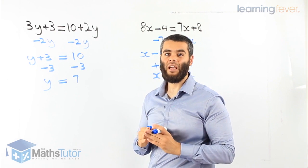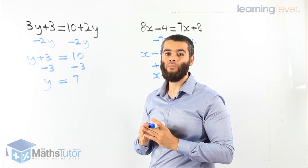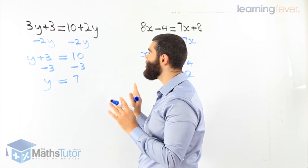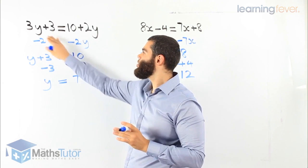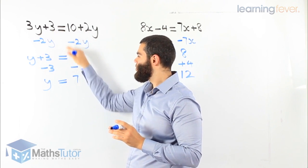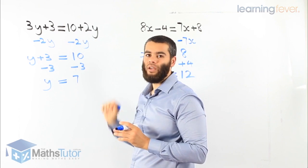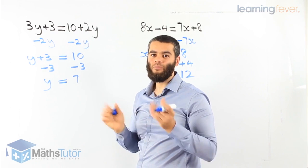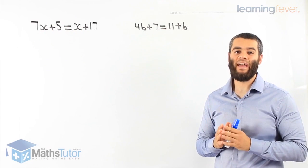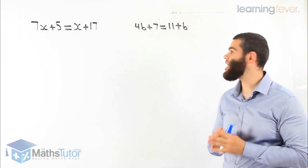Very easy. We follow the steps bit by bit and we get them all correct. Don't get confused — just because you have pronumerals on both sides, we follow this step and we get it right. Let's do some more examples.